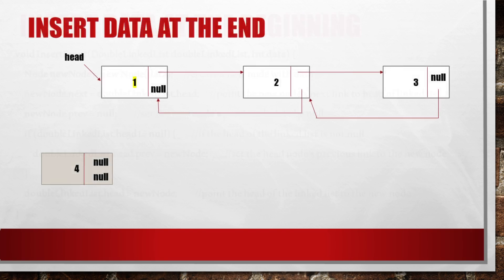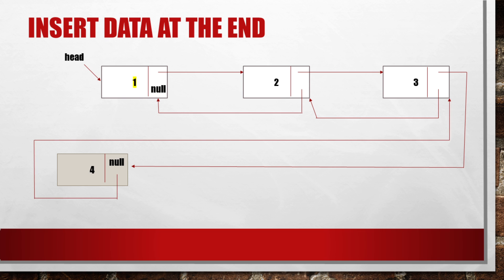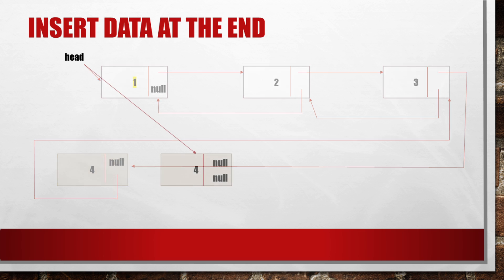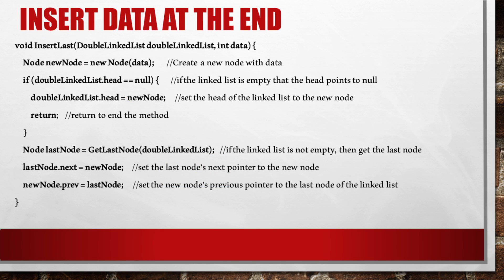Now I will give an example of how to insert data at the end of a doubly linked list, using the same linked list. I want to insert a new node with value 4 at the end. We change the next pointer of the last node to point to the new node with value 4, then change the previous link of the new node to point to the last node. If the linked list is empty and only has a head pointer, we simply set the head pointer to point to the new node with value 4.